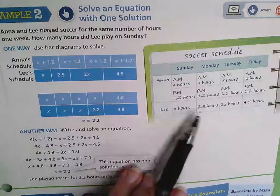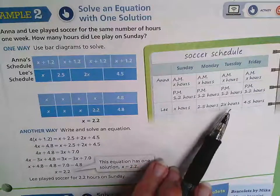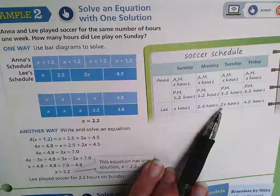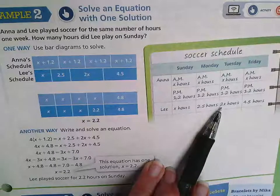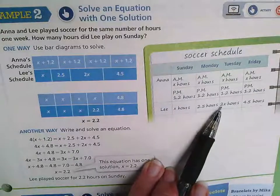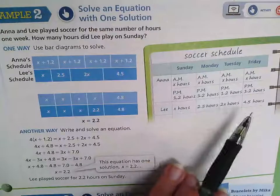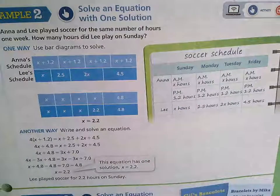He's either playing X number of hours, or a certain number of hours, or a number of hours multiplied by two, and then a certain number of hours.